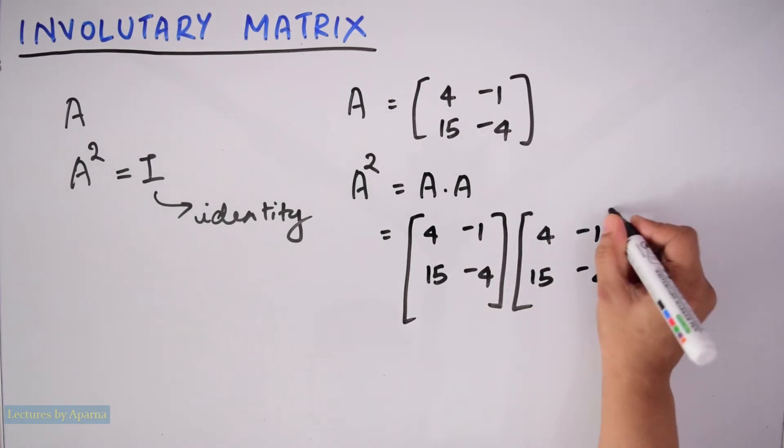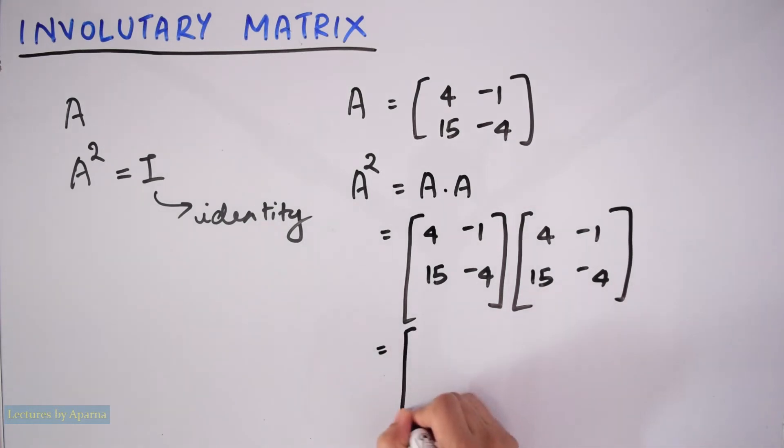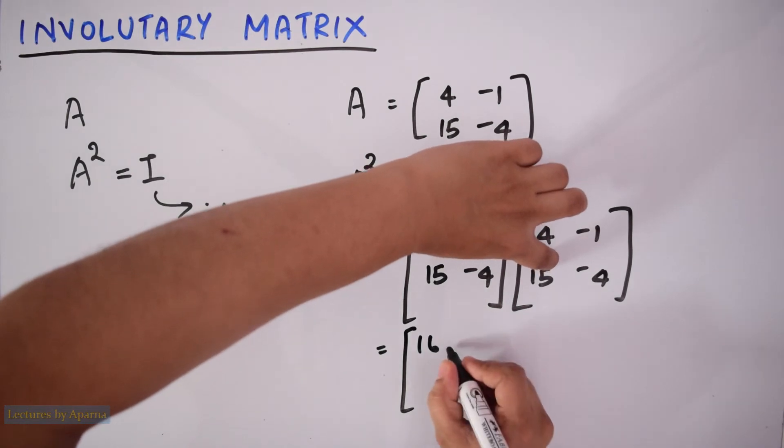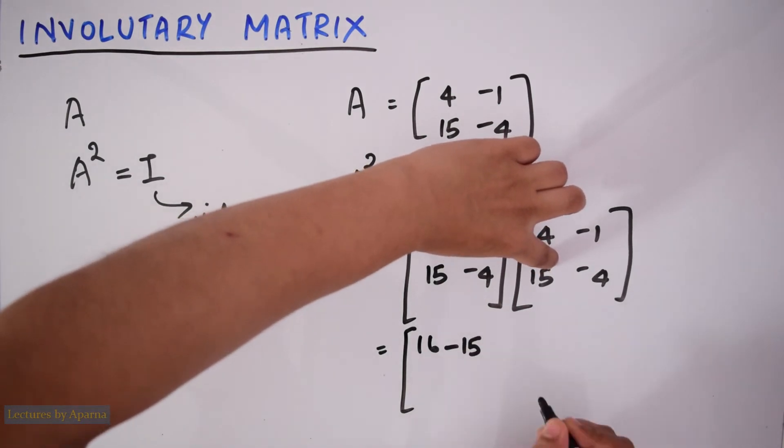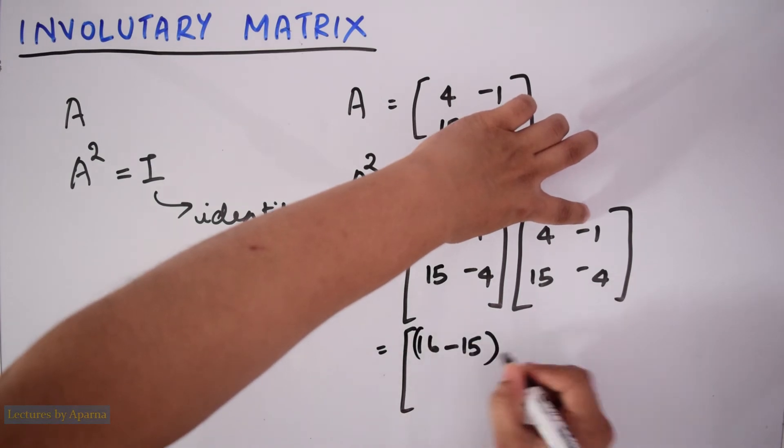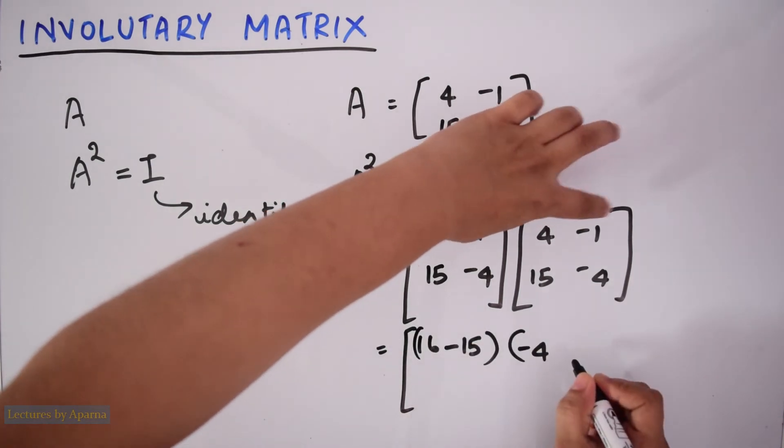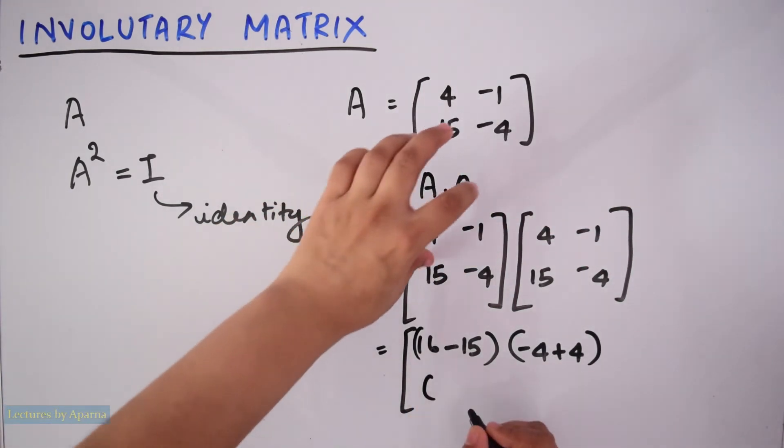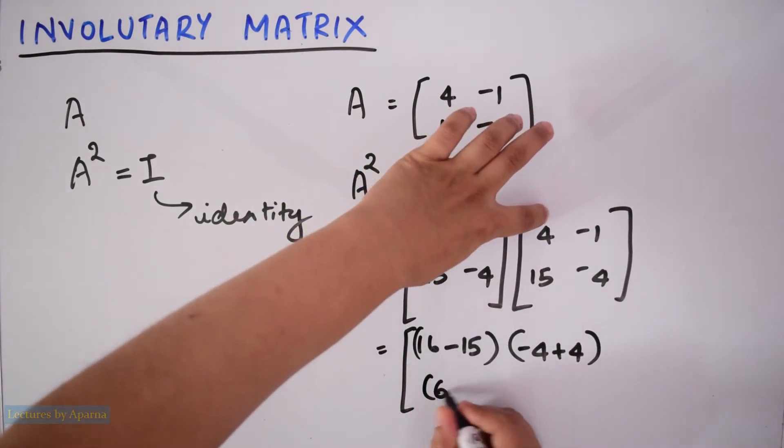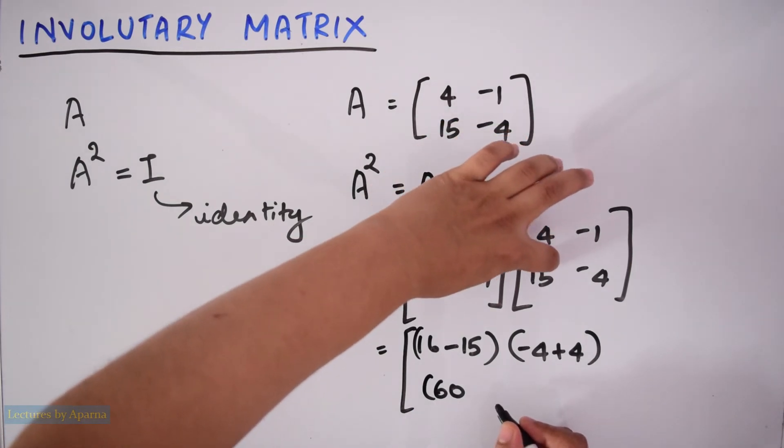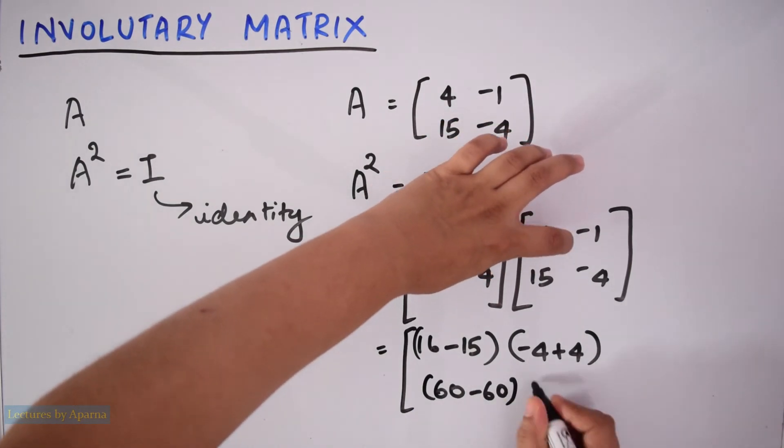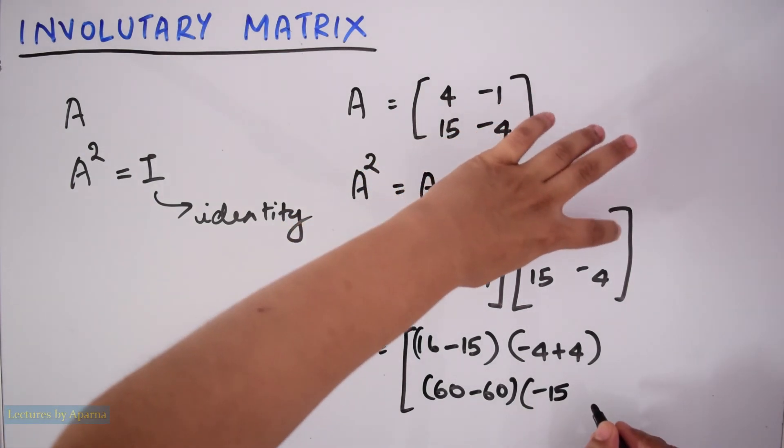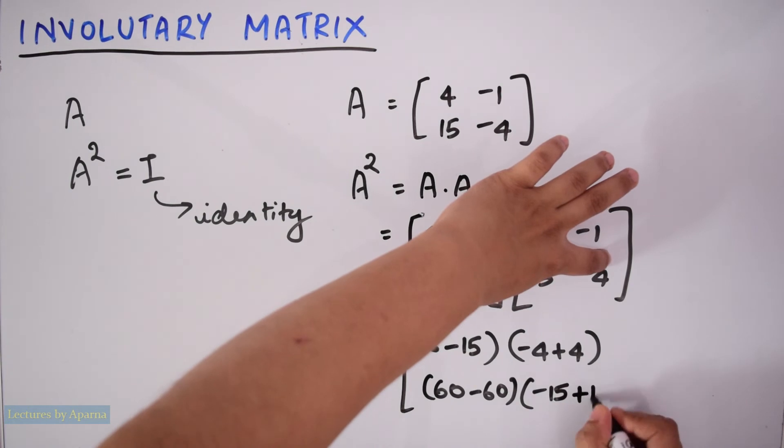So multiplying this, 4 into 4, 16, minus 1 into 15, minus 15, 4 into minus 1, minus 4, minus 1 into minus 4, plus 4. Now 15 into 4, 60, minus 4 into minus 4, plus 16.